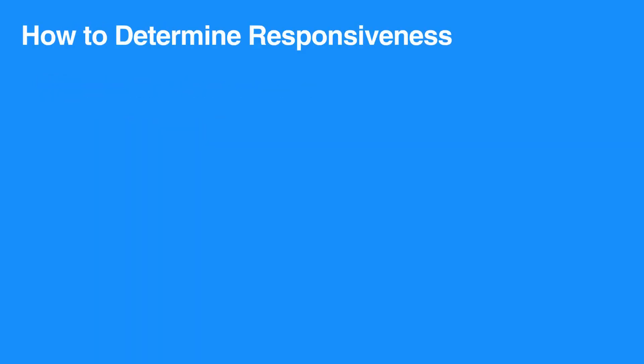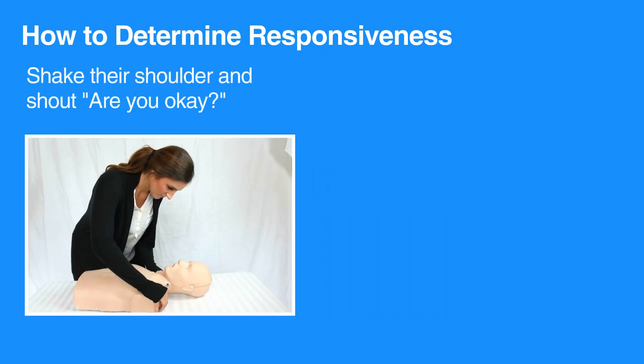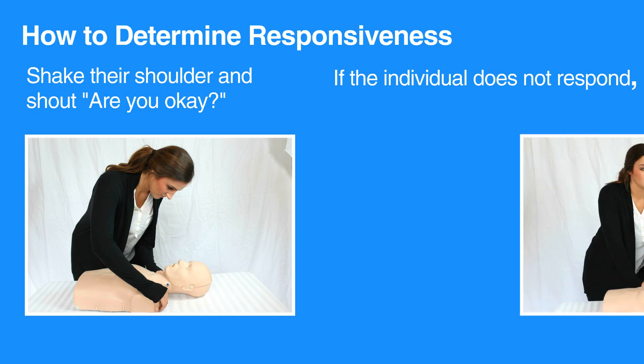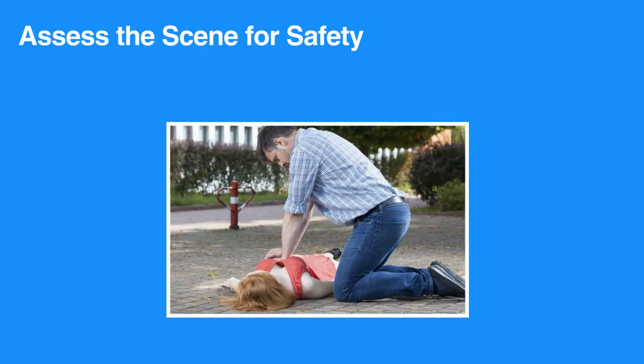The best way to determine responsiveness is to shake their shoulder and shout, 'Are you okay?' If the individual does not respond, then yell for help. Also look for medical identifications such as necklaces or bracelets, which may provide clues about what caused the situation.